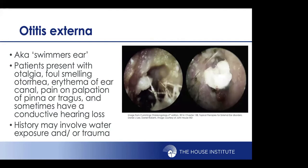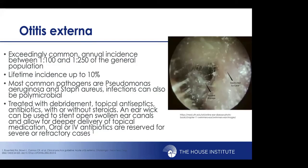Otitis externa — also known as swimmer's ear — patients will present with otalgia, otorrhea, erythema, pain with palpation of the tragus or pinna, with risk factors of water exposure and trauma to the ear canal. It's exceedingly common; between 1 in 100 and 1 in 250 people in the U.S. get otitis externa every year, with lifetime incidence up to 10%. The standard of care is debridement, topical antiseptics, antibiotics with or without steroids, and an earwick to stent open a swollen ear canal.